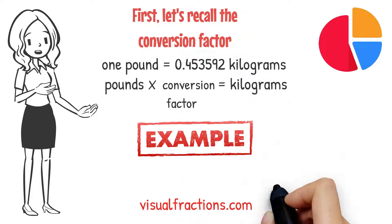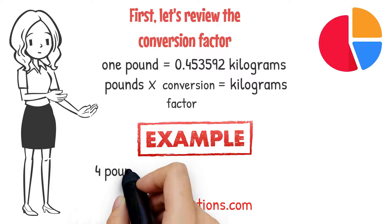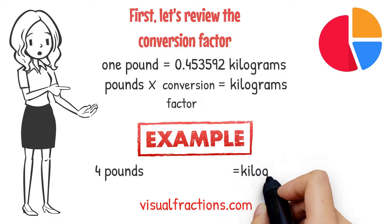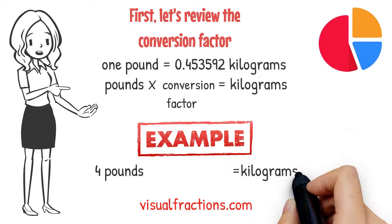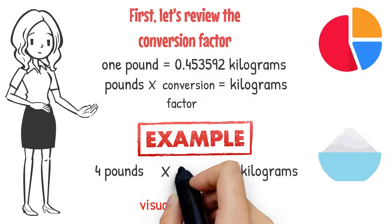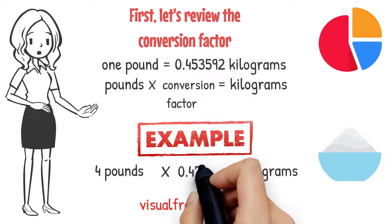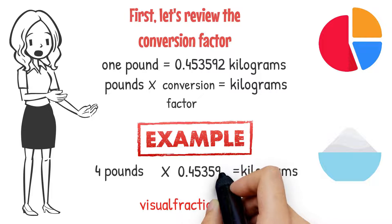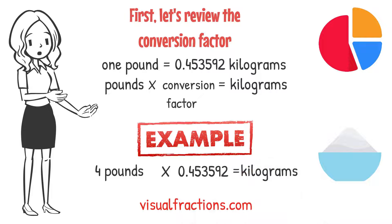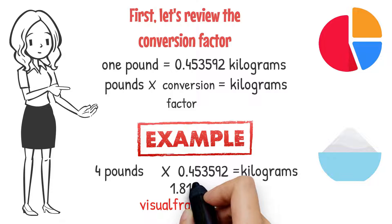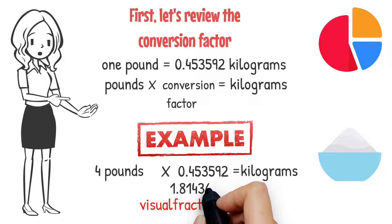Suppose you have 4 pounds of flour that you need to convert to kilograms. We start by multiplying 4 by 0.453592. This gives us approximately 1.814368 kilograms.